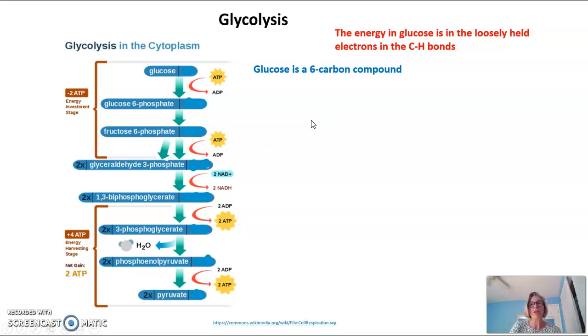So glucose here is a six-carbon compound, and I've got pictured here on the left-hand screen the process of glycolysis in a very abbreviated form, and it starts with a glucose molecule, which is a six-carbon compound.